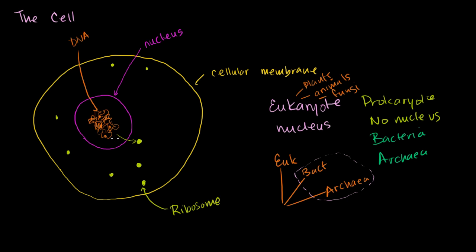If all this talk of DNA transcription into mRNA and translation into proteins makes no sense to you, there are several videos where I go into that in detail. But here I want to focus on all the different parts to give a big picture. Ribosomes are where mRNA transcribed from DNA gets translated into proteins—you can view them as the place where information actually turns into proteins, which can then be used anywhere else in the cell.